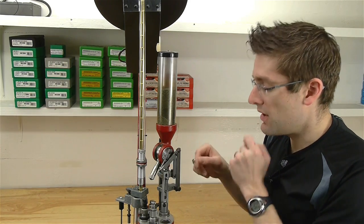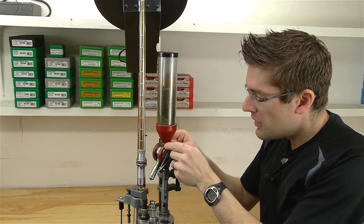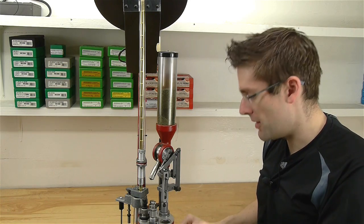So each time we actuate the powder measure, the drum is going to rotate up and that takes a predispensed quantity of powder, drops it down the drop tube.